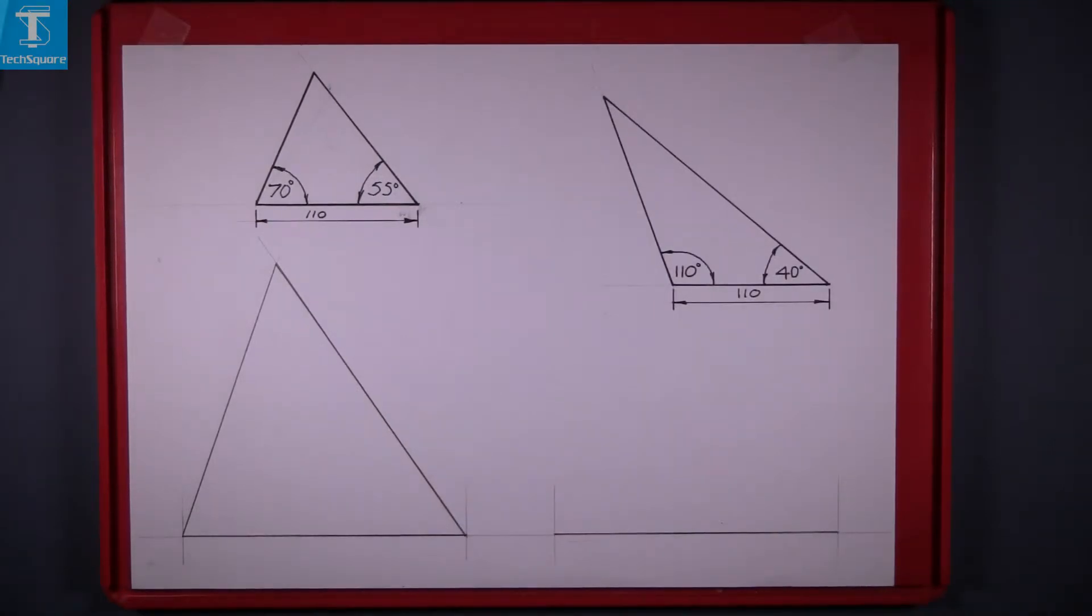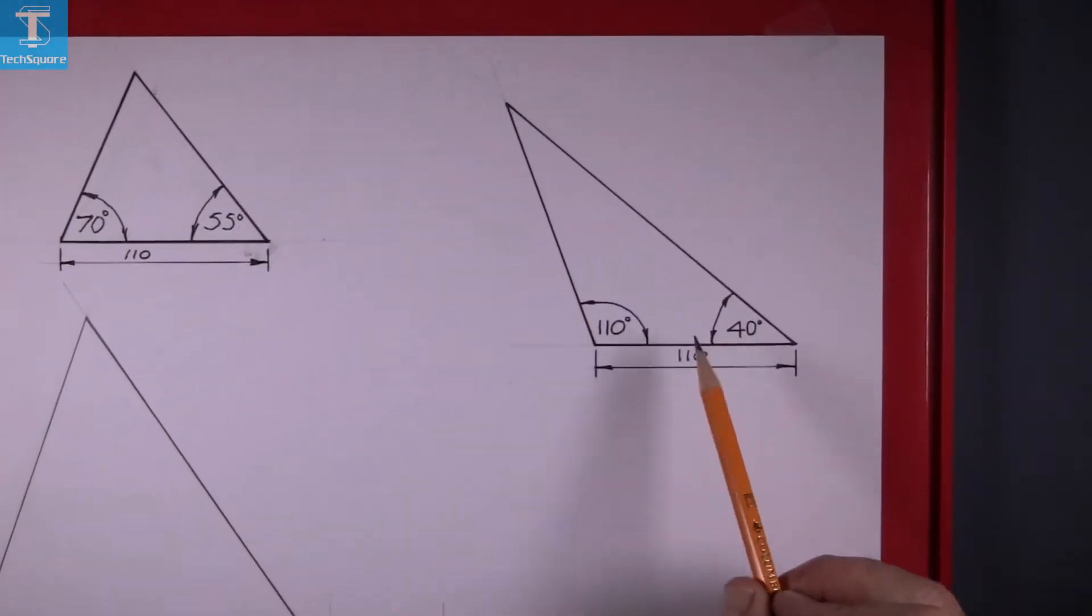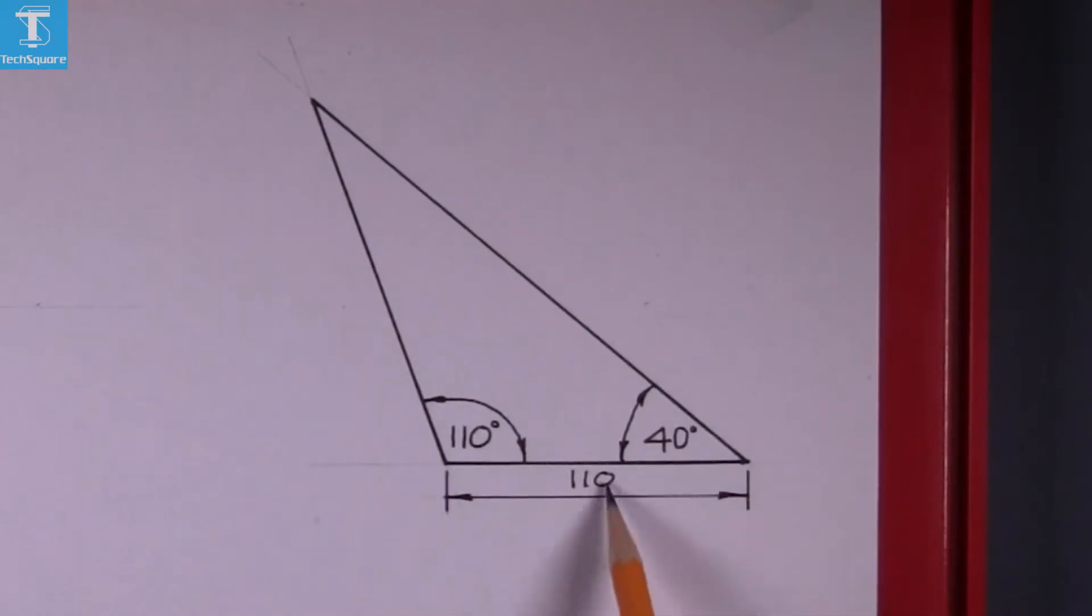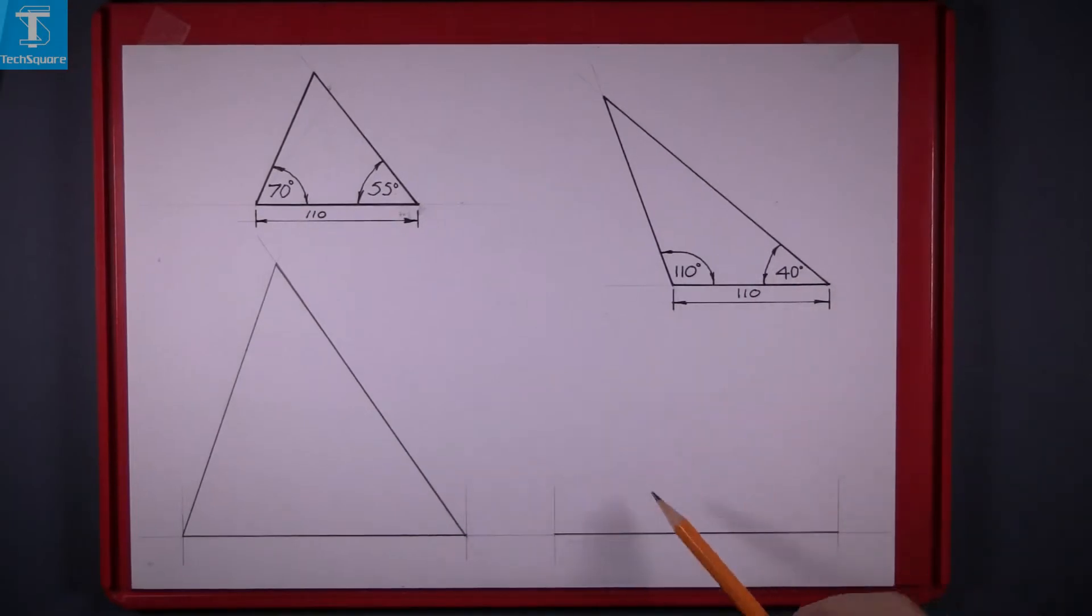Now the next exercise we are going to do is draw this triangle here. It's a base of 110, this angle is 110 degrees and that's 40 degrees.